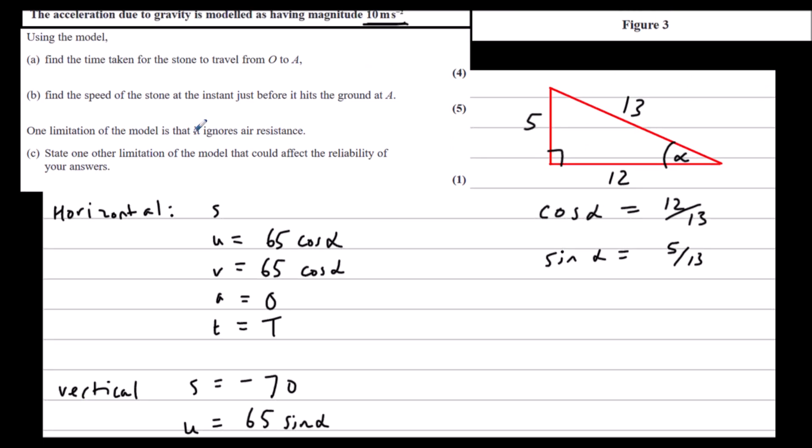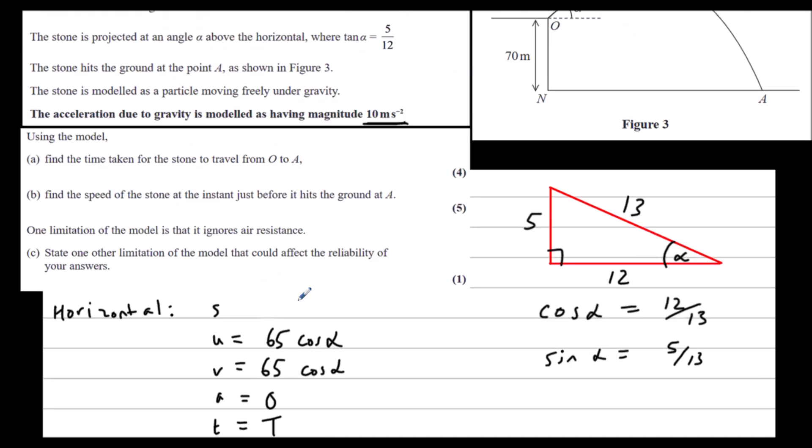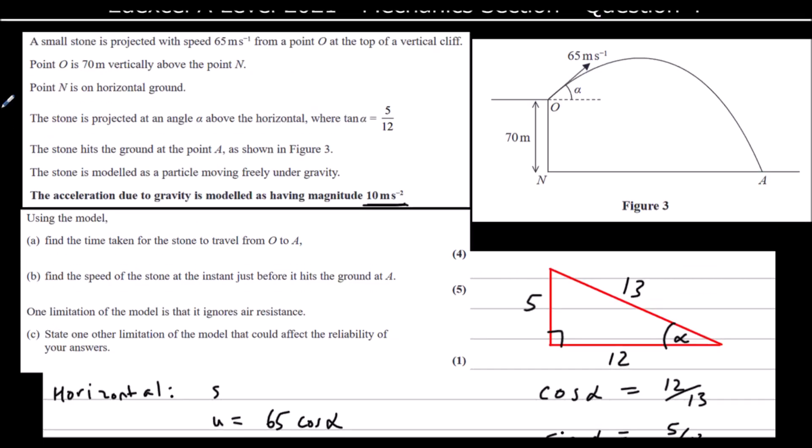One limitation of the model is that it ignores air resistance. State one other limitation of the model that could affect the reliability of your answers. We could pick up a modeling assumption. It's been modeled as a particle, so we're ignoring the dimensions, ignoring the size of the stone.